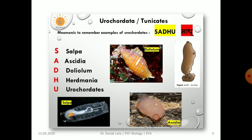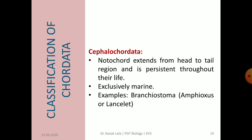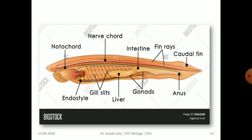By this mnemonic, you can easily memorize the members of Urochordata. Now it is about Cephalochordata. In this case, notochord extends from head to tail region and is persistent throughout their life, and they are also exclusively marine. Common example is Branchiostoma, that is Amphioxus. Here is the figure of Branchiostoma.